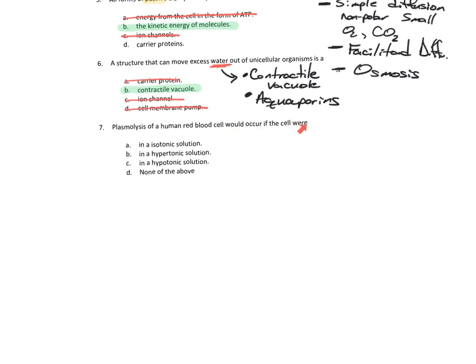The contractile vacuole moves water against the concentration gradient — it's pushing things out, requires energy, this is active. Aquaporins — this is passive, one of the facilitated diffusion things. Plasmolysis of a human blood cell would occur when? What is plasmolysis? When the cell shrinks up — when it lets water out. And it was going to occur in hypertonic solutions. Plasmolysis — cells shrink in hypertonic solution, but when they shrink so much they can't function anymore, they're dying. That's plasmolysis — death by dehydration of a cell.